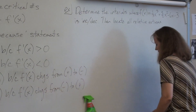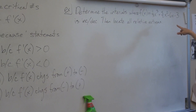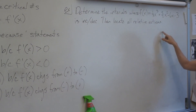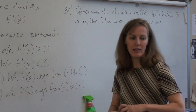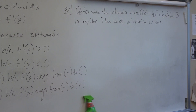Okay, first example: determine the intervals where f(x) = (1/3)x³ + (5/2)x² − 6x − 3 is increasing or decreasing, then locate all relative extrema. In your groups, follow the first derivative test: find the first derivative, find the critical numbers, make your sign line, and then stop.